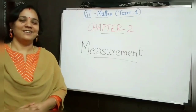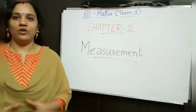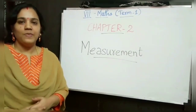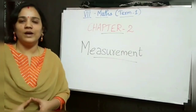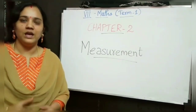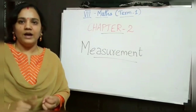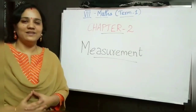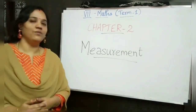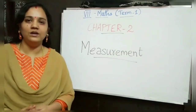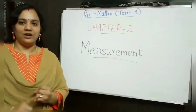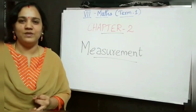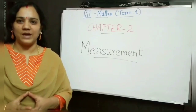The same topic we are going to learn but with different content. In sixth standard you might have learned the area and perimeter of square, rectangle and triangle. Now in seventh standard first term we are going to learn area of parallelogram, rhombus and trapezium — these are the new shapes.